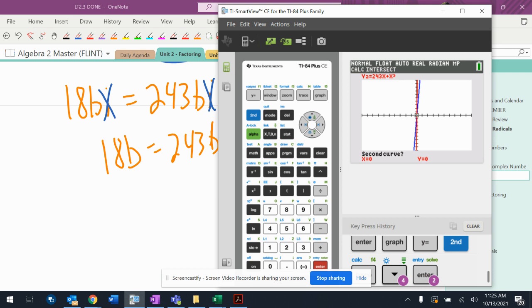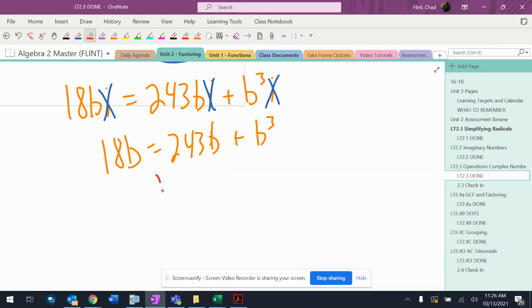So first curve is the blue one, second curve is the red one. Guess I'm going to just move that over there someplace. Okay, all right, and it intersects at zero zero. All right, so one of the intersections is b equals zero.